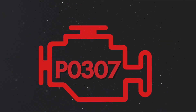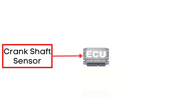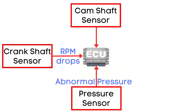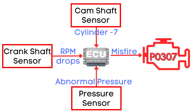Now let's dive into why P0307 gets triggered. The Engine Control Unit, or ECU, monitors signals from the Crankshaft Position Sensor, Camshaft Position Sensor, and Cylinder Pressure Sensor. These sensors provide real-time data about your engine's performance. When a misfire occurs, it causes the engine's RPM to drop abruptly, and the pressure inside the cylinder becomes abnormal. This sudden change in signals is what the ECU reads as a misfire. The Camshaft Position Sensor helps the ECU determine which specific cylinder is experiencing the misfire — that's how the P0307 trouble code is triggered.